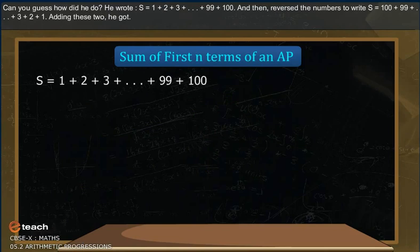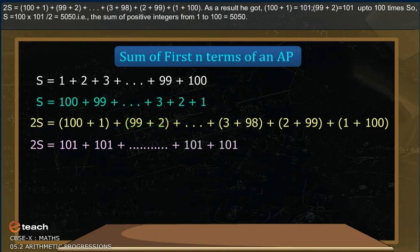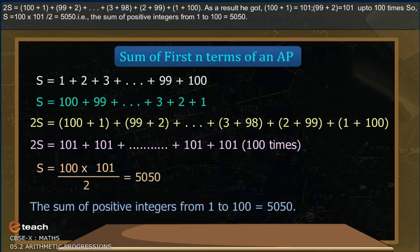He wrote S = 1 + 2 + 3 + ... + 99 + 100, then reversed the order: S = 100 + 99 + 98 + ... + 2 + 1. Adding these two: 2S = (100+1) + (99+2) + ... + (1+100). Each pair sums to 101, and there are 100 such pairs. So S = 100 × 101 ÷ 2 = 5050.